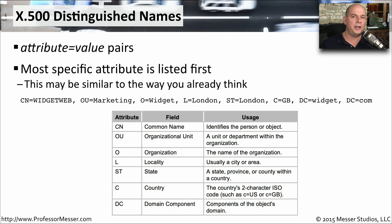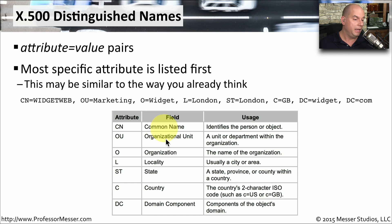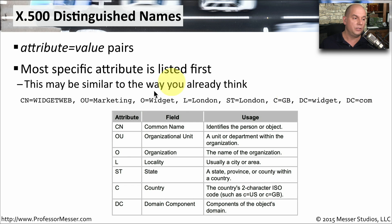If you look into the details of an LDAP database, you'll see a common structure with an attribute and a value associated with that attribute. For example, a common name attribute identifies a device — in this case, a device called WidgetWeb. The OU, or organizational unit, shows this device is part of marketing. The organization is Widget, the locality and state are London, the country is Great Britain, and the domain components are Widget and Com — so this device is WidgetWeb located at Widget.com.